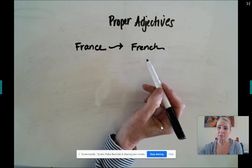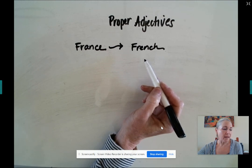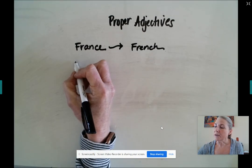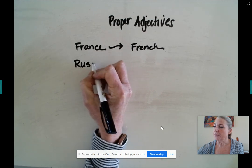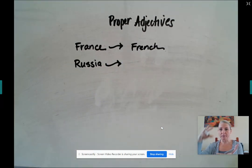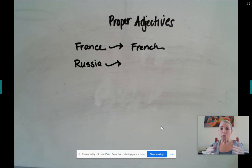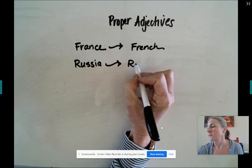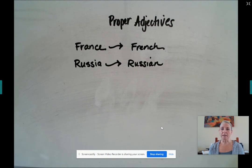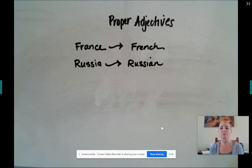It's describing the language spoken in that country. Let's talk about the proper noun Russia. If you've ever seen the dolls that nest inside one another, we wouldn't refer to them as Russia nesting dolls. We would refer to them as Russian nesting dolls. So the work we're going to be doing today is thinking about the proper noun and how it is changed into a proper adjective.